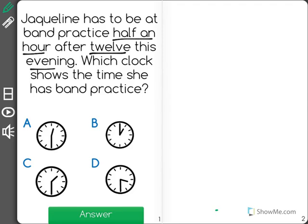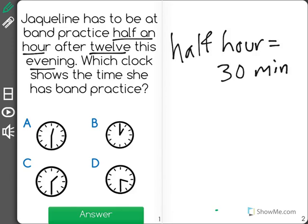Now, I know here that half an hour is equal to 30 minutes. It's also represented by half of a movement around the clock. And if it's after 12, that means that the hours will be 12.